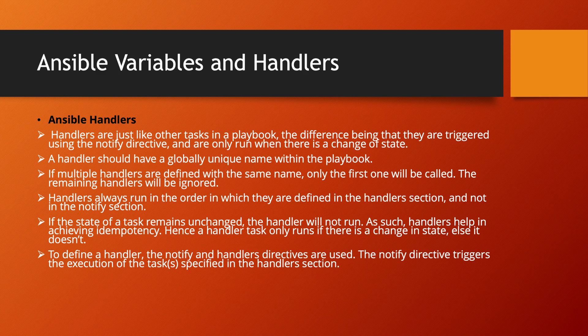Let us start with another very important topic related to Ansible — that is Ansible variables and handlers. Ansible variables are very useful when your code length is a thousand lines, two thousand lines, or even five hundred lines, where you define multiple things like software name, version, port number, and other parameters in multiple places.